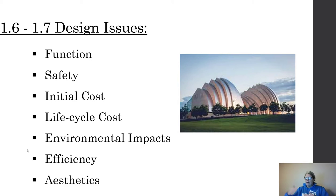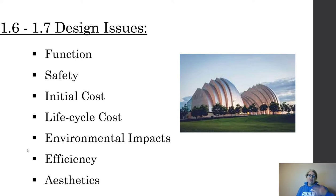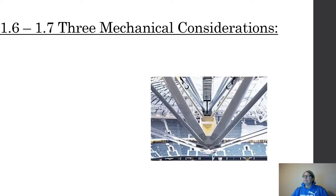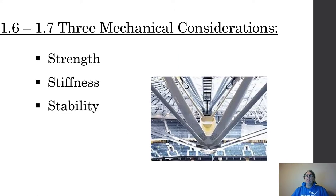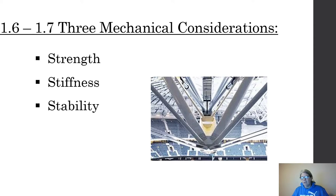Environmental impacts, efficiency, and aesthetics all factor in — we don't want the same cookie-cutter design every time. When looking at mechanical considerations, we consider strength, stiffness, and stability, and they are all different things. Take the second floor of a mall: you can feel vibrations in the floor walking around up there on those walkways that overlook the downstairs.